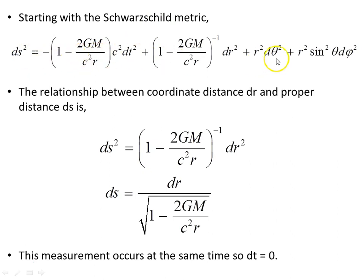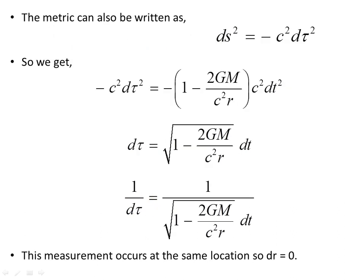And just to remind ourselves of the metric again, here we are. Now the relationship between coordinate distance dr and proper distance ds, is where it comes from, ds squared, is this object here. Now this measurement occurs at the same time, so this measurement is performed at an instant in time, and so dt is zero, and of course we had a radial null path so the angular components all disappeared. And so all we're left with is ds squared is equal to this part here. To find ds, the proper length I should say, is equal to ds is dr on the square root of this object here.